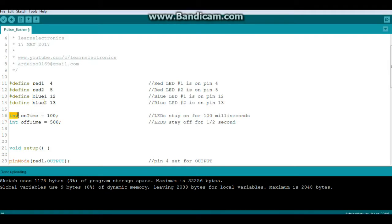First one is onTime and it equals 100, and that is our wait time for the LEDs to stay on and they will stay on for 100 milliseconds or a tenth of a second. Another integer variable called offTime and that's 500 milliseconds or half a second.